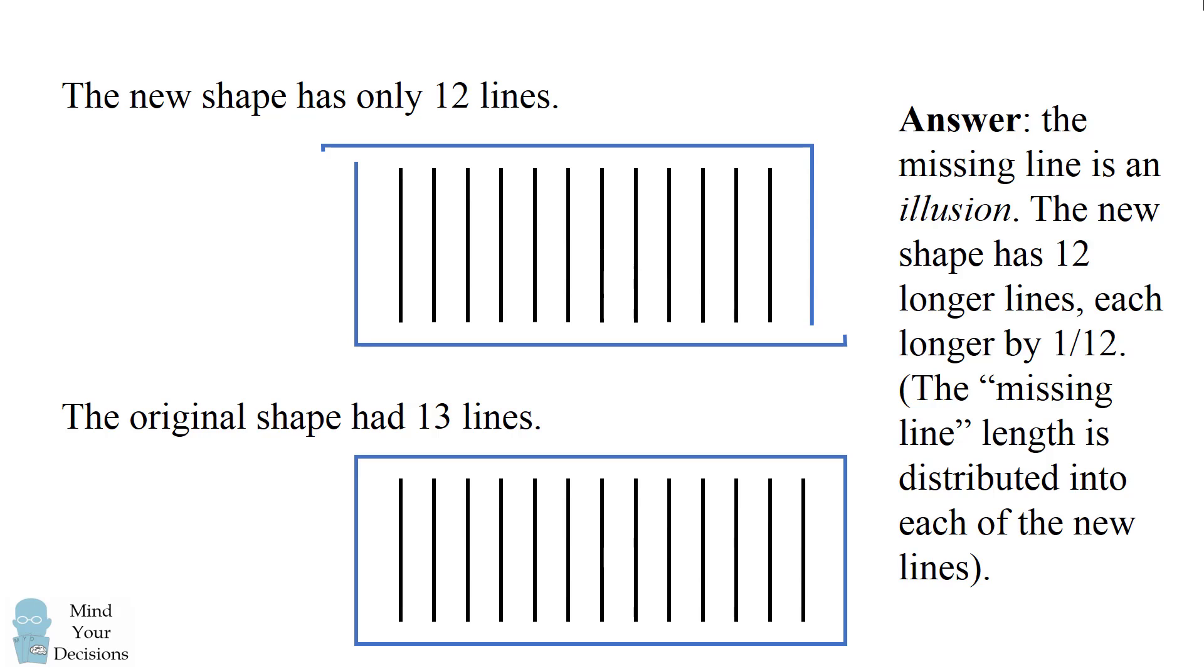The missing line is an illusion. The new shape has 12 lines, but they are longer lines. Each line is longer by one twelfth compared to the original shape. In other words, the missing line length is distributed evenly into each of the new lines.